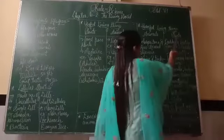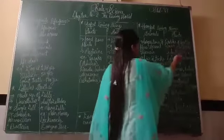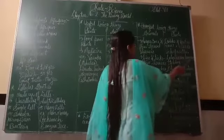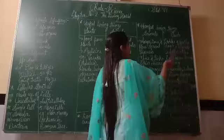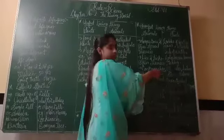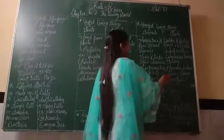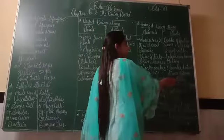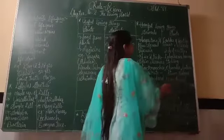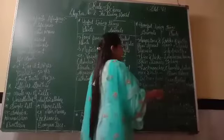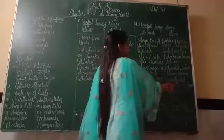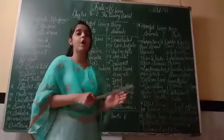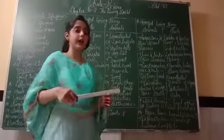Now, harmful plants include Boder, Parthenium, weeds, pods of nettle, and Colocasia leaves. These are all harmful to us because they cause itching. Next, oleander causes a strong odor. Uncontrolled growth of algae causes water pollution — if we cannot control algae growth, it pollutes our water.